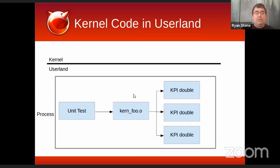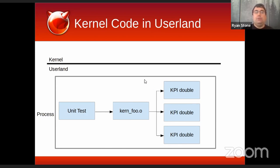This slide emphasizes that we have our unit test, which is just some C++ code that's going to execute tests. It calls into some kernel file that you have compiled for userland and linked as an executable. Any KPIs that kernel file depended on will have been replaced by KPI doubles. This is all happening in the context of a single process, all in userland — there's no interaction with the kernel at all, other than normal system calls like writing a failure to standard error.